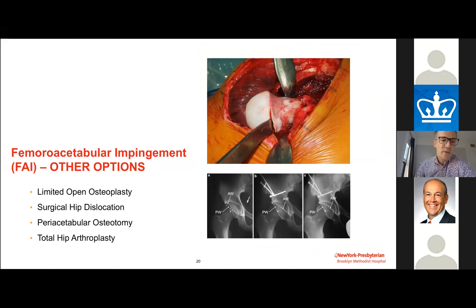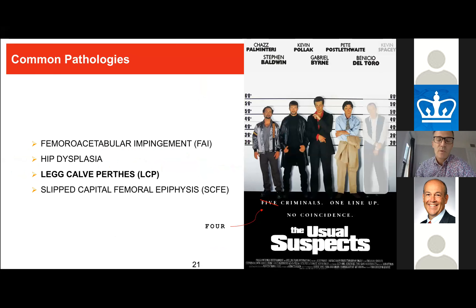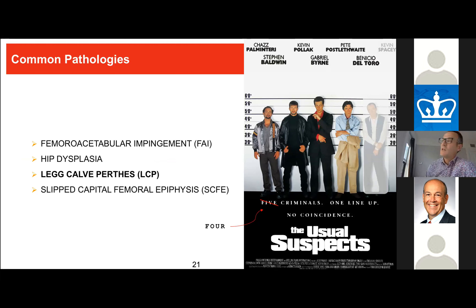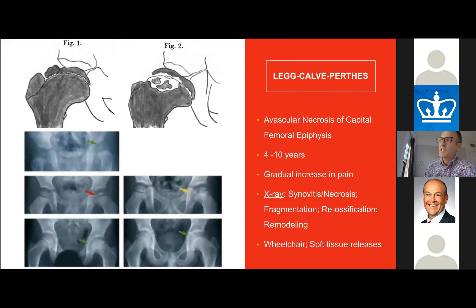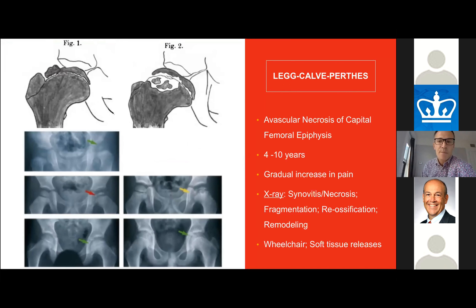The third classic pediatric hip pathology that needs to be on the radar is Perthes disease, which is avascular necrosis of the capital femoral epiphysis. While not as common as hip dysplasia or impingement, early recognition is important — particularly in the primary care setting — since early recognition and treatment can possibly prevent the need for extensive future surgery.